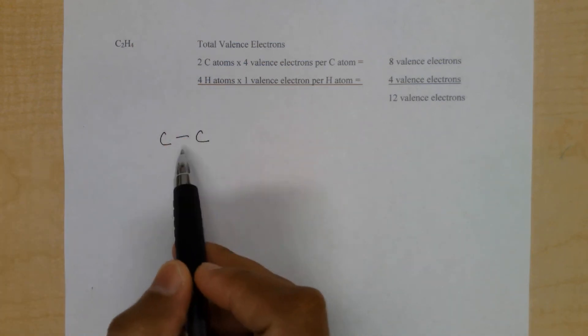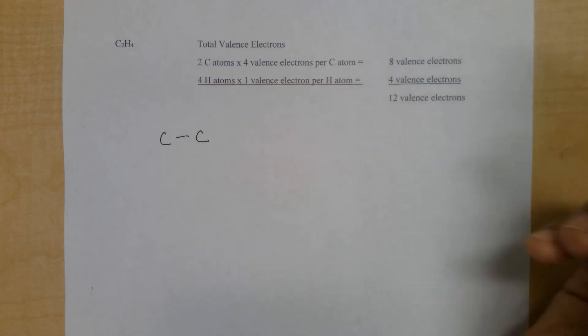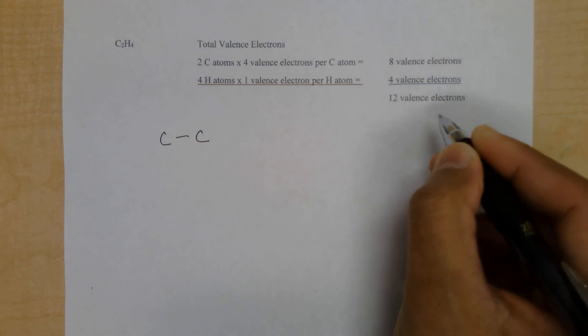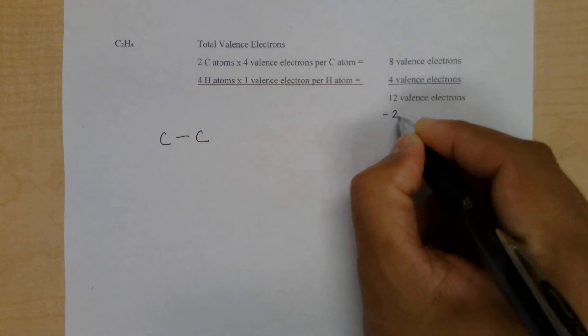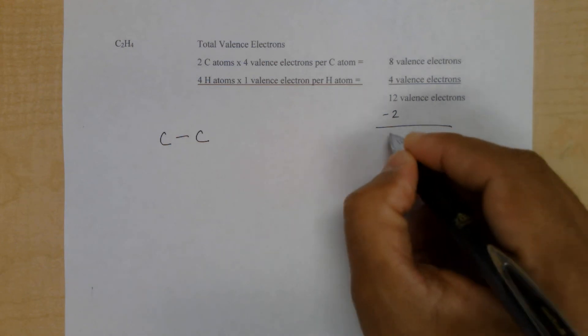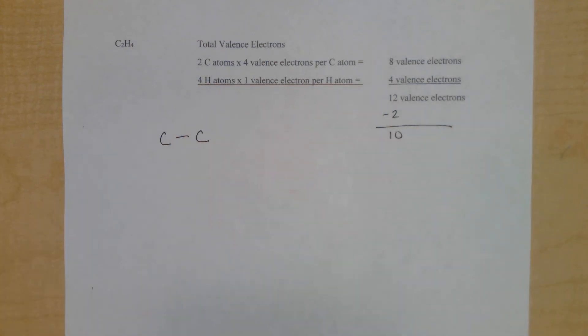The connection here is a covalent bond, or a shared pair of electrons. Of the 12 valence electrons, we've used 2 for this connection, and so there are 10 valence electrons remaining.